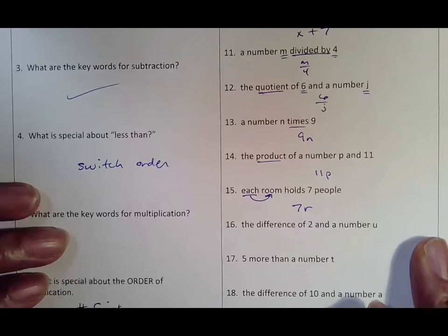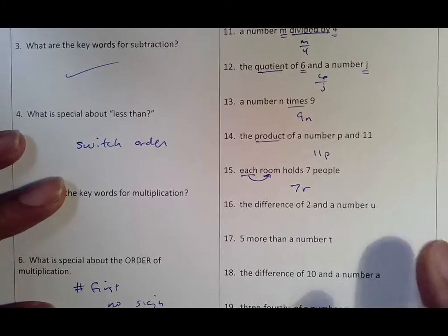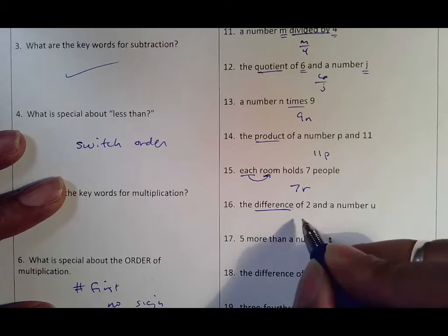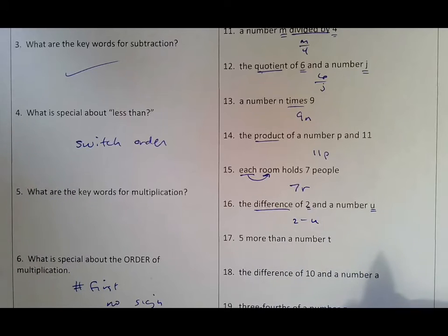Each room holds seven people, so you're going to do 7r. Again, the variable should be based off of whatever you're talking about based off of each, per, or every. The difference of two and a number u: difference means subtract, two goes first, u goes second. That's all there is.